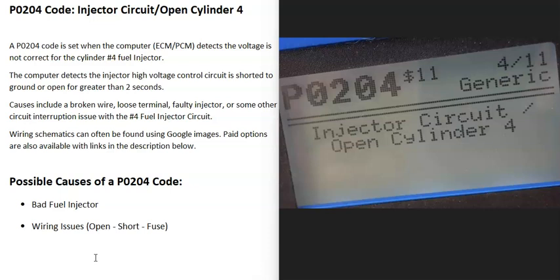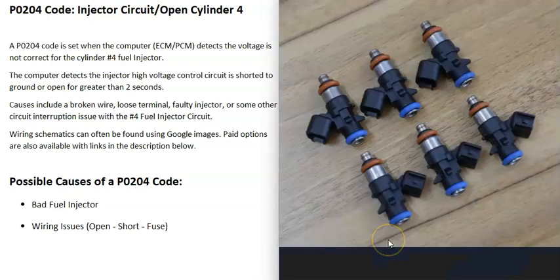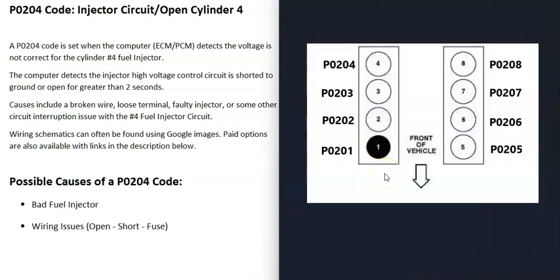Today I'm talking about a P0204 code — what it is and how you can go about fixing it. A P0204 is an injector circuit open for cylinder 4. Basically, each cylinder inside the engine has a fuel injector that sends fuel into that cylinder, but when you get a P0204, the computer is seeing some kind of problem with that injector. A P0201 would be cylinder one, P0202 cylinder two, and so on.